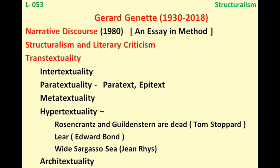Hello friends, this is lesson number 53 in the series of literary criticism and theories. In this lesson we shall discuss Gerard Genette. He is a minor writer related to structuralism. He is a French theorist and his famous works are: Narrative Discourse: An Essay in Method, and Structuralism and Literary Criticism. All these French writers first wrote in their own language and these works were later translated into English.